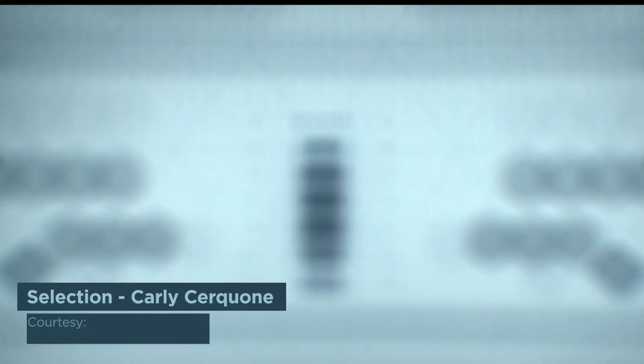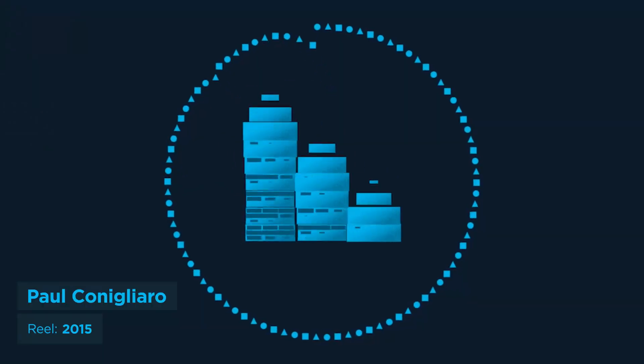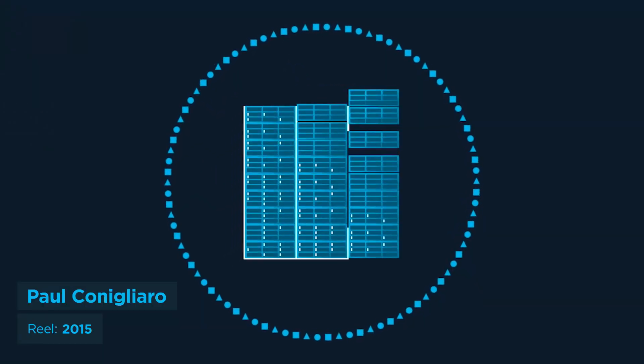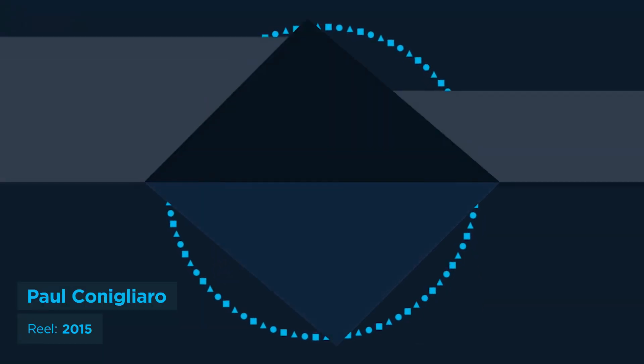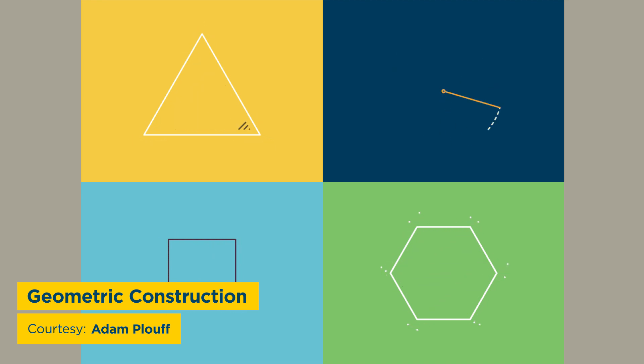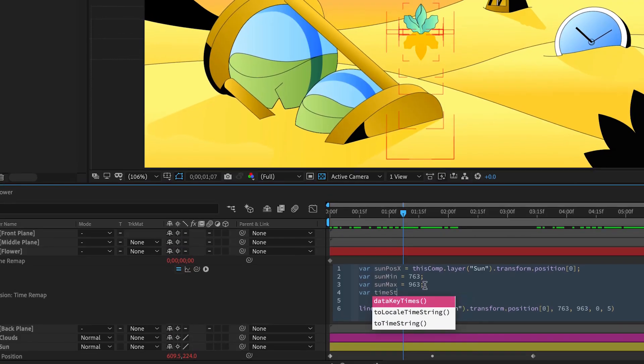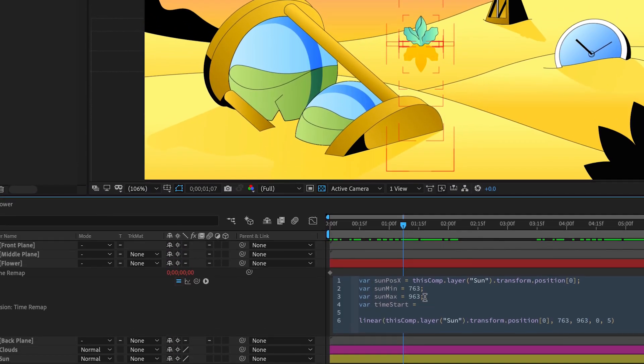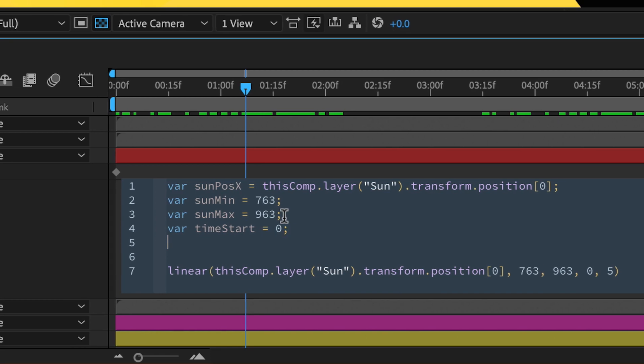Expressions in After Effects are unbelievably powerful tools that can automate repetitive tasks, helping make templates and rigs you can reuse, and create complex effects and behaviors that would be nearly impossible to pull off with keyframes. And if you're like me, expressions can also fill you with awe and terror. I mean, I'm an artist, not a software developer. How am I supposed to get the hang of them?